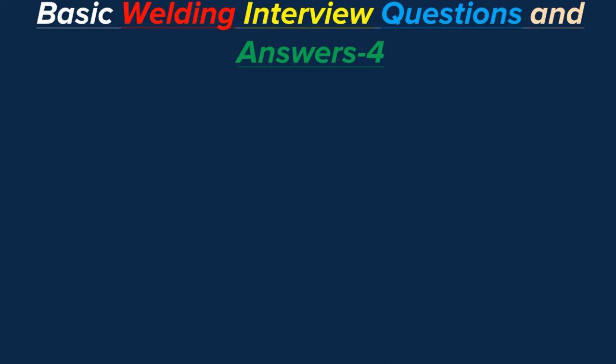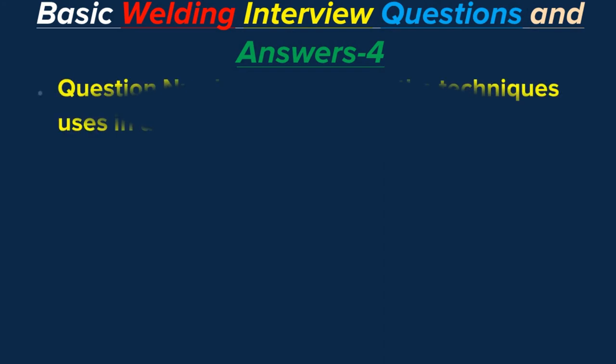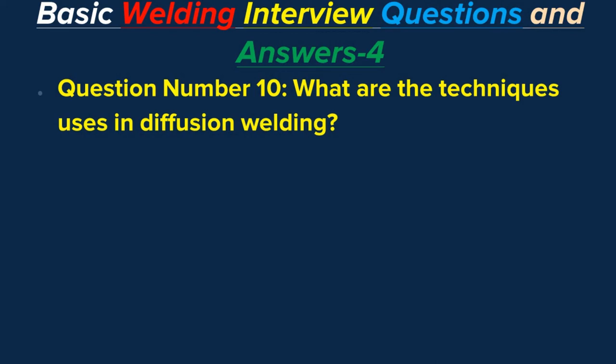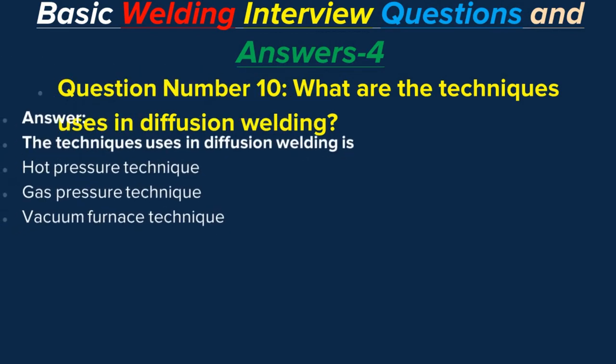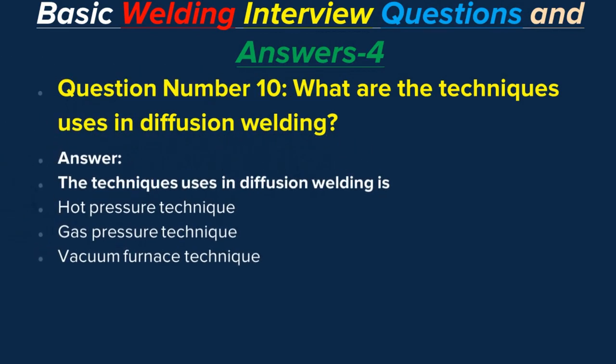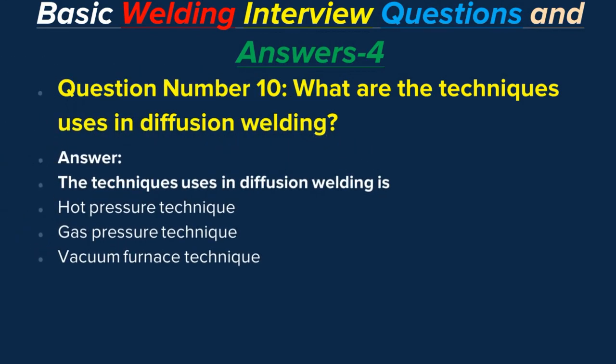Question number ten: What are the techniques used in diffusion welding? Answer: The techniques used in diffusion welding are the hot pressure technique, gas pressure technique, and vacuum furnace technique.